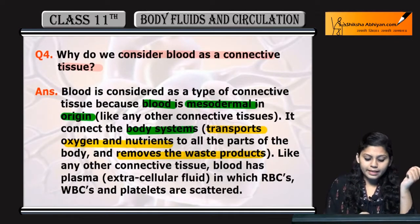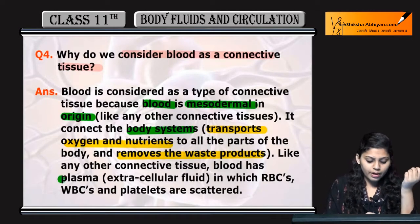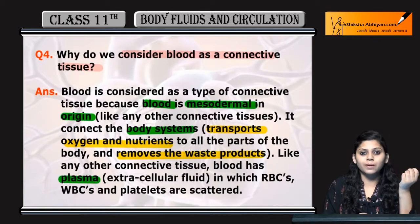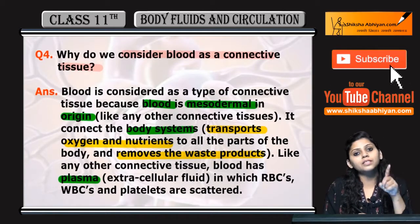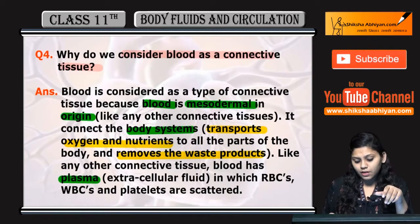Like any other connective tissue, blood has plasma. Plasma is the matrix in which the cells are scattered.